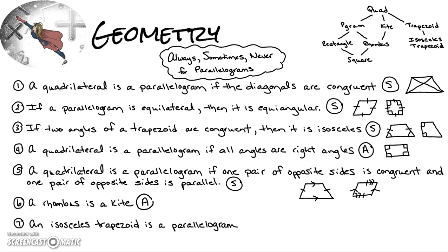Number six: a rhombus is a kite. That is always true — you can use the flowchart since the rhombus is below a kite. Going up in the diagram means always: a rhombus is always a kite, a square is always a rhombus. Going downward gives a sometimes answer — a rectangle is sometimes a square, a parallelogram is sometimes a rhombus.